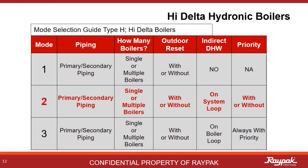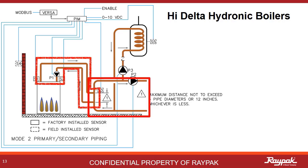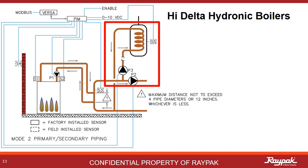Moving on to the Mode 2 discussion. What makes a Mode 2 a Mode 2 is the presence of an indirect domestic hot water system on the system loop. In Mode 2 primary-secondary, you still have the two loops — the boiler loop and the system loop. The decoupler is still there to pressure-isolate the two loops. What makes this a Mode 2 is the addition of an indirect domestic hot water heat exchanger tank on the system loop. A more detailed explanation of how a Mode 2 system works can be found on the High Delta Part 2 Wages Approach video.